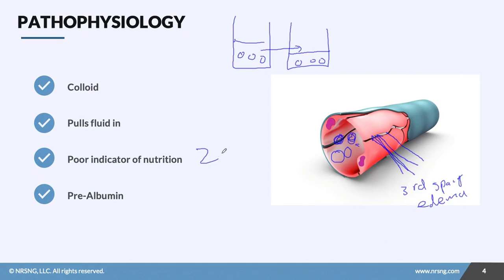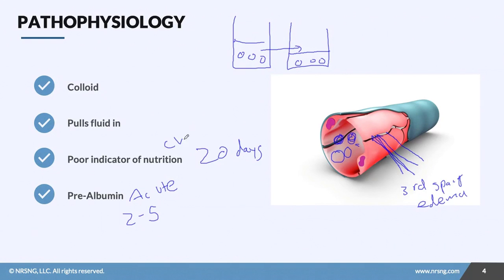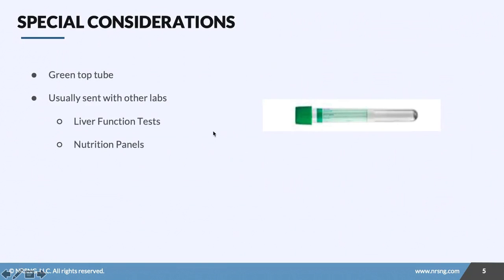Albumin is a poor indicator of nutrition. Why? The half-life of albumin is about 20 days — that's a long half-life. A better indicator of nutrition would be pre-albumin, because its half-life is only two to five days. So we're going to see pre-albumin used more in acute nutritional issues, whereas albumin is more indicative of chronic issues.